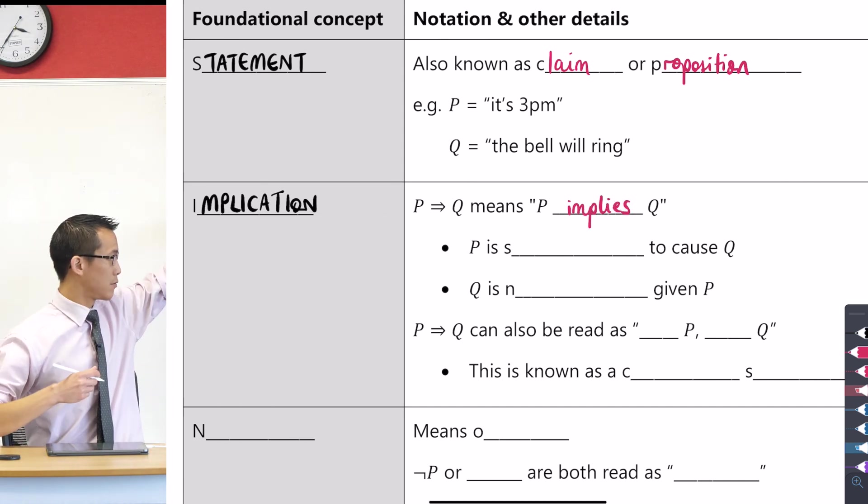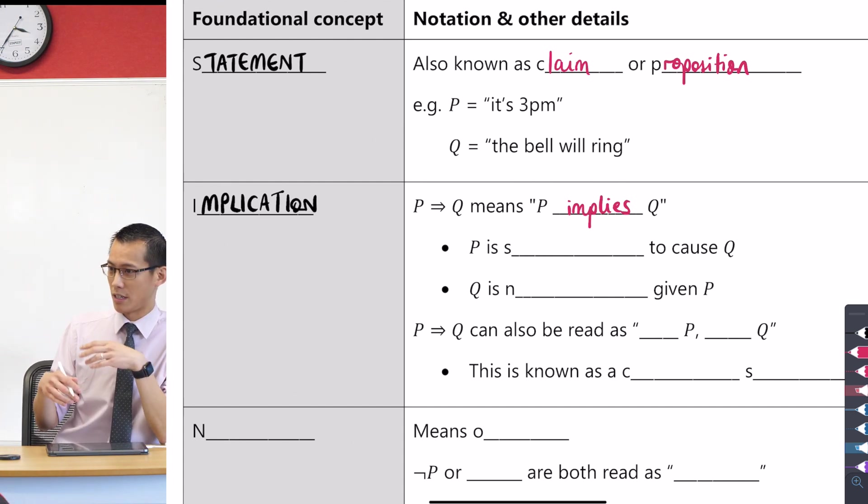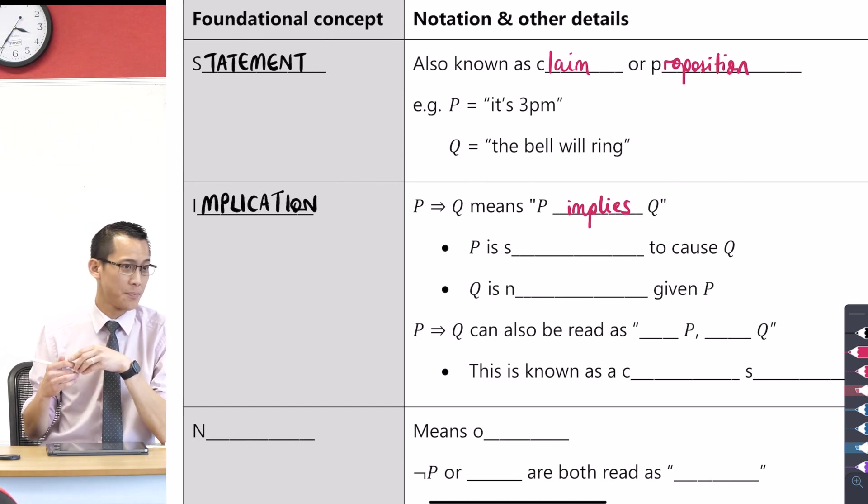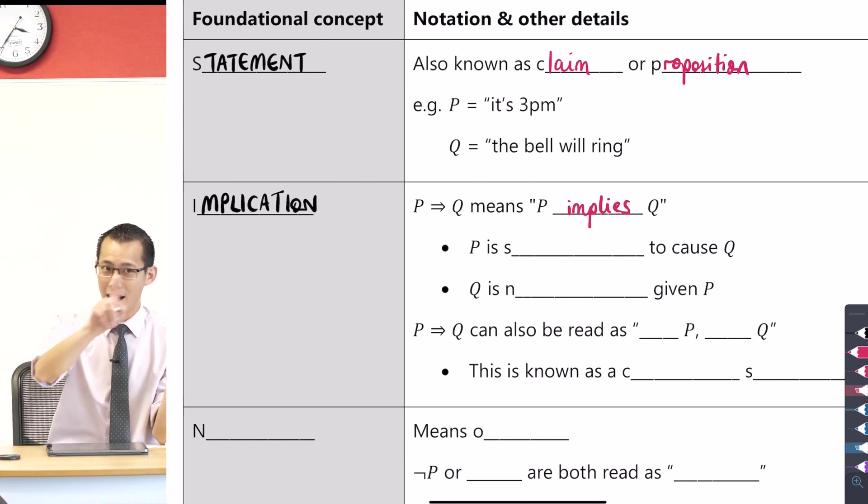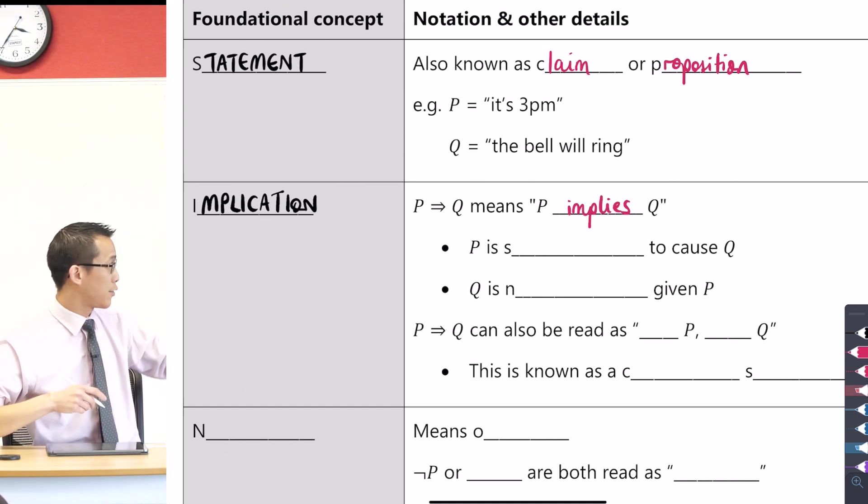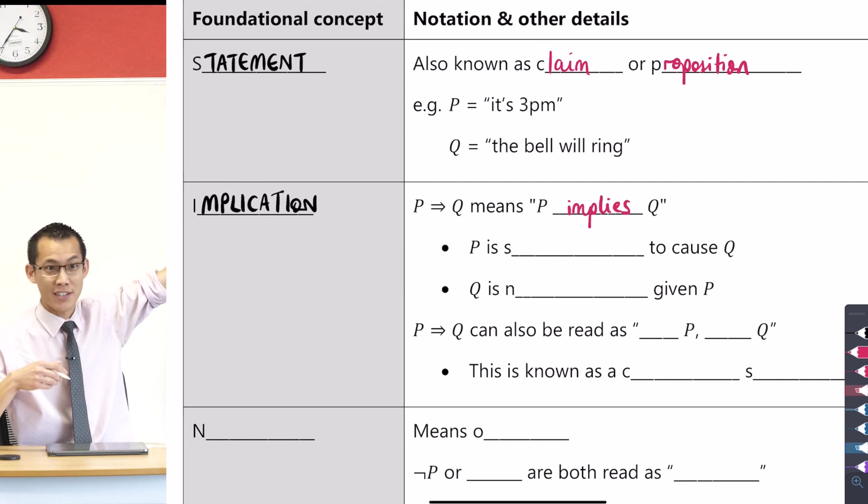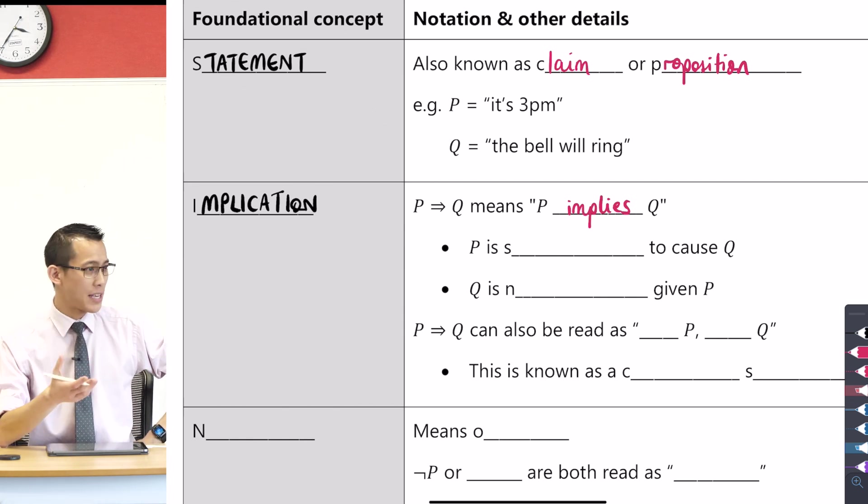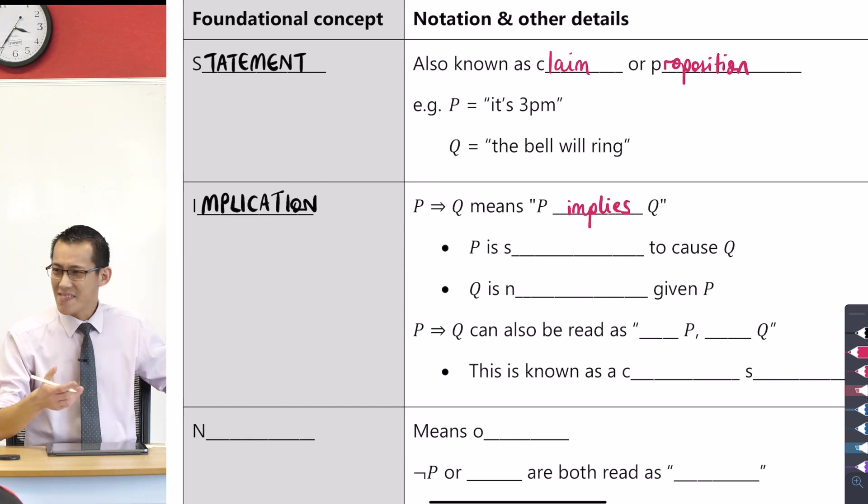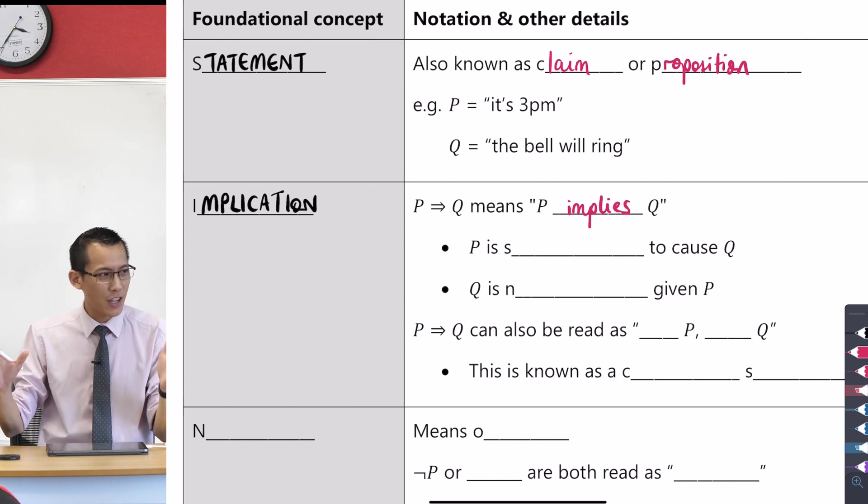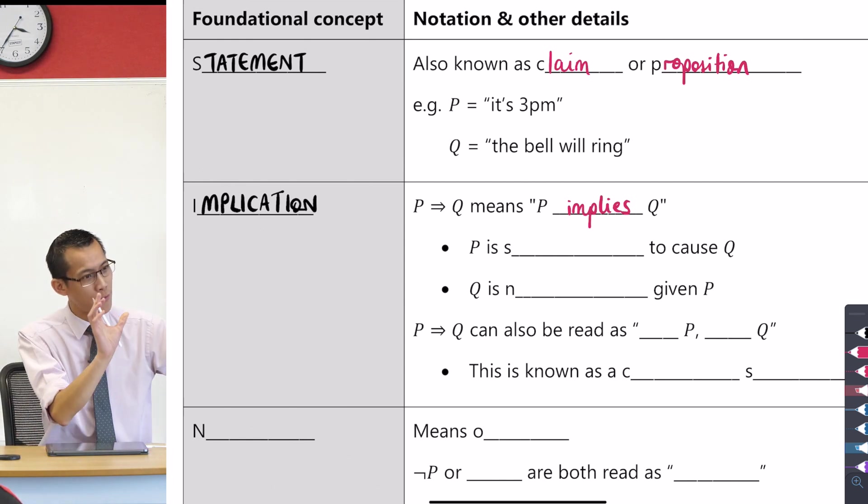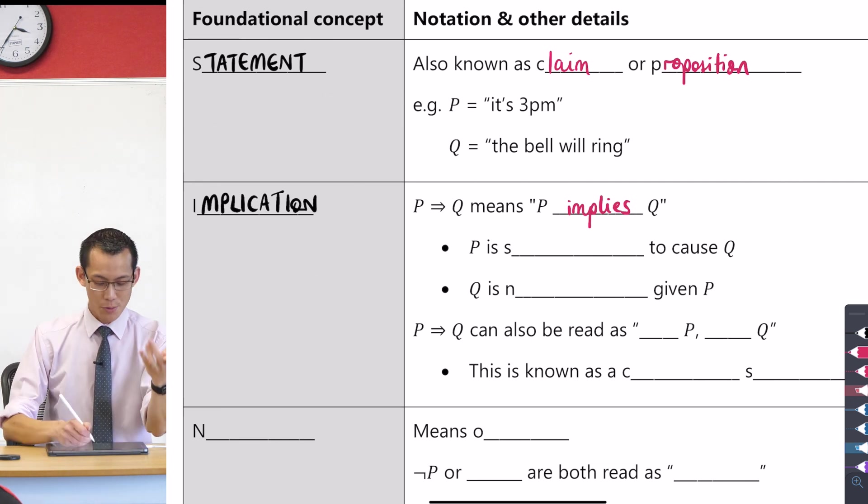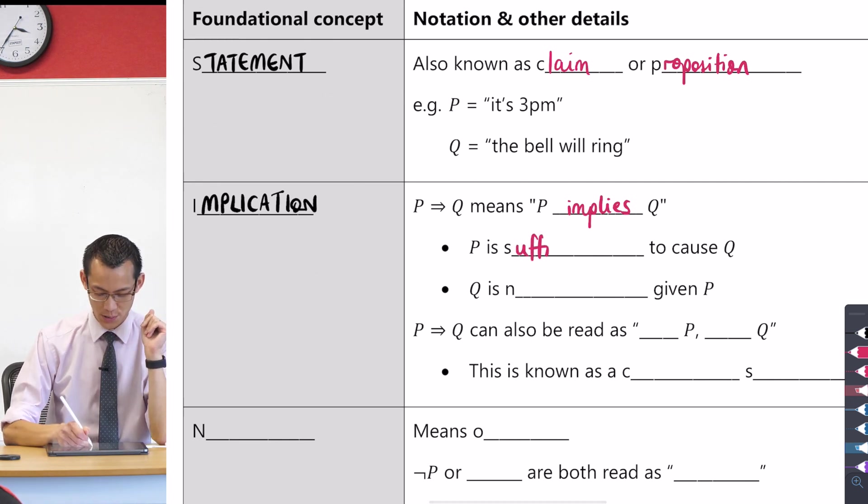Now, just like with this box, with the statement, we're going to dig into this a little more and explore some of the different ways of saying the different language you can use here. So if P implies Q, and if you have a look up above, I am suggesting that P, it's 3 p.m., implies Q, the bell will ring. We can say this in terms of, well, P, it's enough. It's adequate. It will cause Q. But we have a fancy word for enough or adequate, starts with an S. We would say it's sufficient to cause Q. Thank you very much.